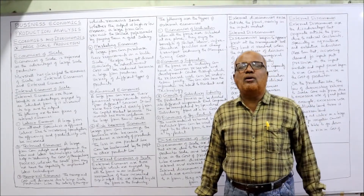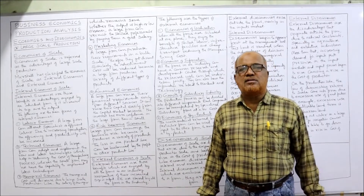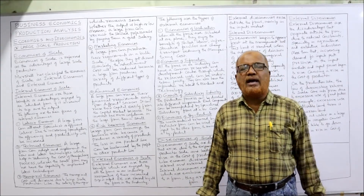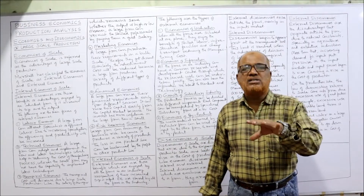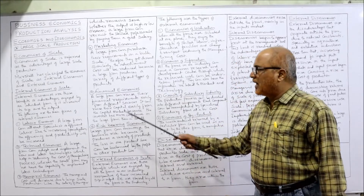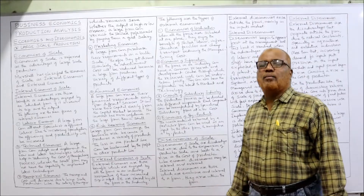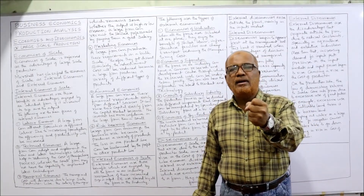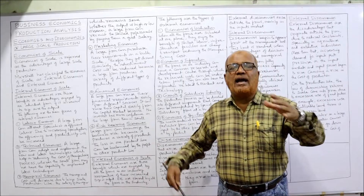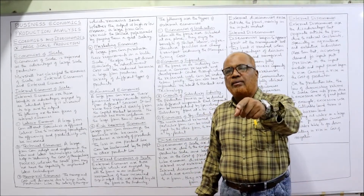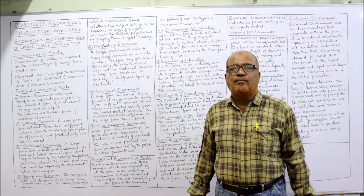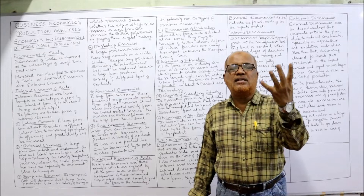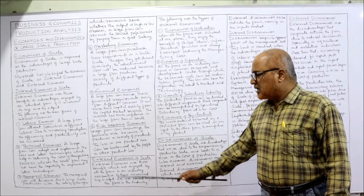Next are financial economies. A large business can easily procure capital — banks come forward to finance large businesses rather than small ones. Investors also prefer to invest in large businesses. So money is not a problem for large scale businesses. Additionally, risk-bearing economies arise: a large business has greater risk-bearing ability because when it produces different types of products, even if one product incurs a loss, another product may generate profit, allowing the business to survive.